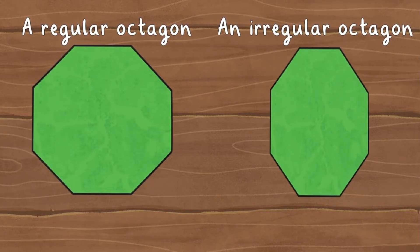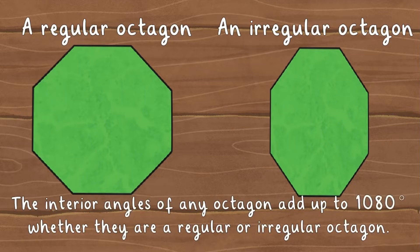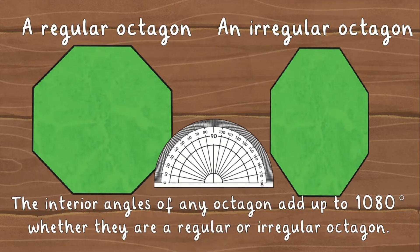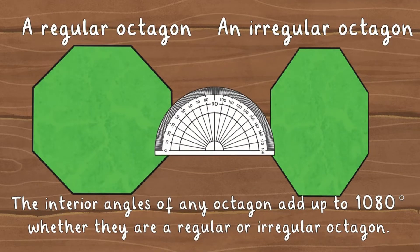Irregular octagons do not have all equal sides. The interior angles of an octagon add up to 1080 degrees whether they are all the same size like in a regular octagon or different sizes such as in an irregular octagon.